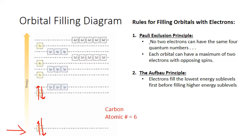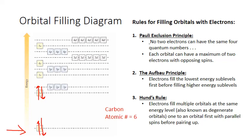To get to six electrons, we need two more, and those go into the 2p sublevel. To fill sublevels like the 2p, 3d, or 4f — sublevels that have multiple orbitals all at the same energy — we follow our third rule, Hund's rule. It states that electrons fill multiple orbitals at the same energy level, also known as degenerate orbitals, one to an orbital first with parallel spins before pairing up. For carbon, we put two electrons into the 2p orbitals — one per box, spinning in the same direction.